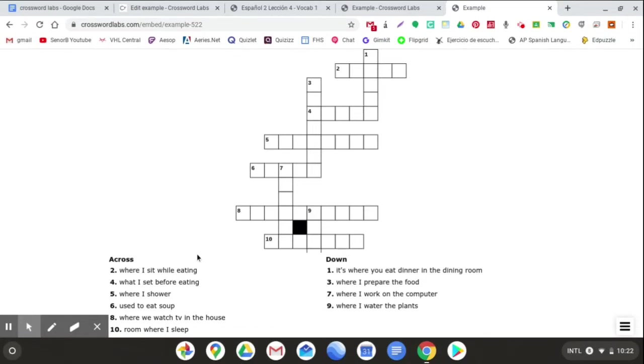Let's take a look at what it looks like when I get one right and when I get one wrong. So if I click over here, the number 2, it takes me to where that number 2 is. Or if you want to, you can just click through out here also. But let's do number 2. So where I sit while eating, that was table. So I'll just type table. And then if I click somewhere else, it'll put a red X or a green checkmark next to the number 2 over here telling me if I'm right or wrong.